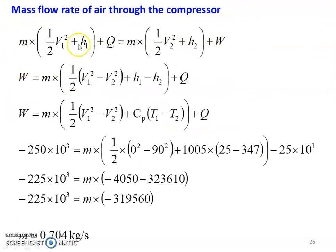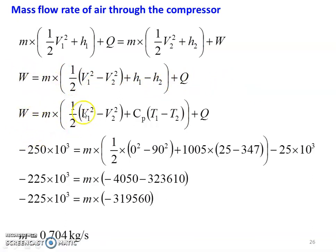Writing the Steady Flow Energy Equation for the compressor (Z values cancel from both sides): M × [(1/2)V1² + H1] + Q = M × [(1/2)V2² + H2] + W. Rearranging: W = M × [(1/2)(V1² − V2²) + CP(T1 − T2)] + Q. Substituting W = −250 × 10³ (negative because work is given to the compressor), V1 = 0, V2 = 90 m/s, CP = 1005 J/kg·K, T1 = 25°C, T2 = 347°C, Q = −25 × 10³.